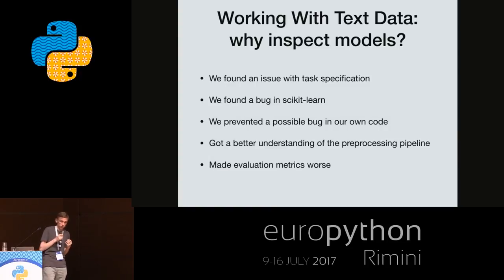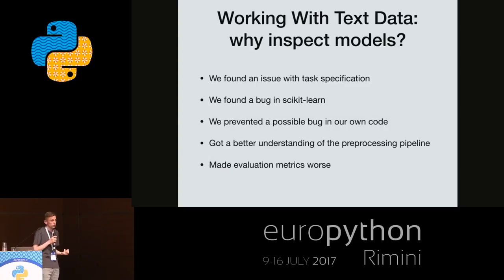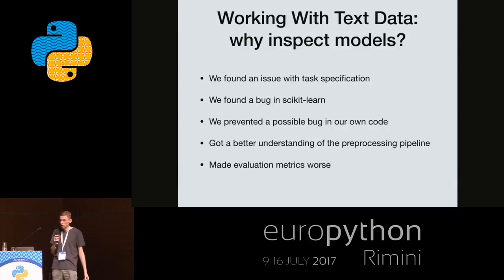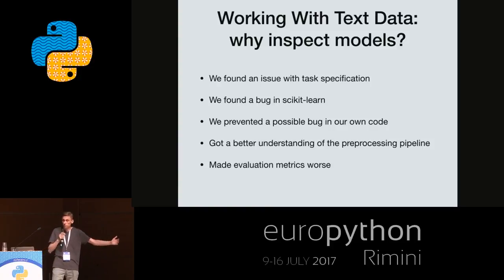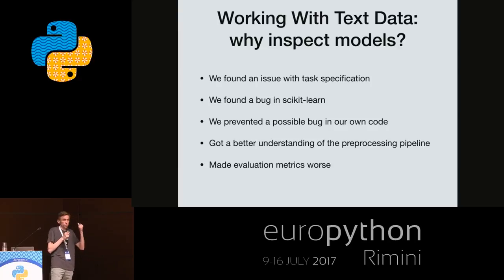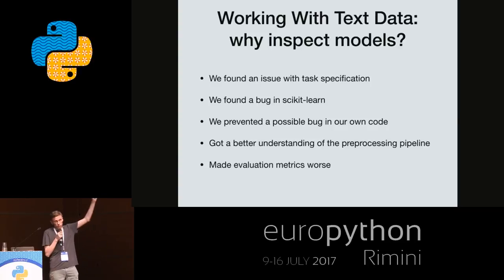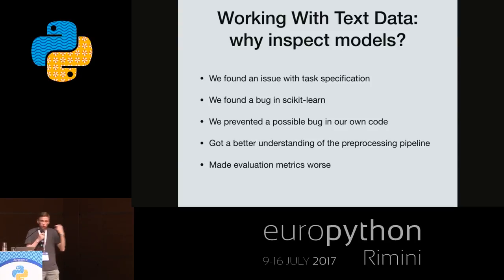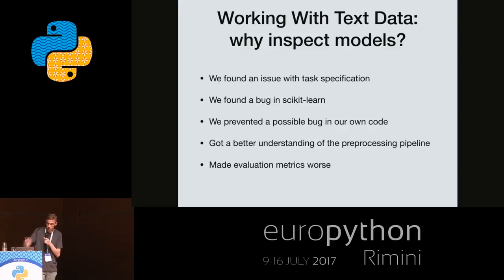By inspecting the model and checking what's going on, we were able to find an issue with data, an issue with task specification, a bug in scikit-learn, and we prevented a bug in our own source code. We got a better understanding of the processing pipeline — though we also made our evaluation score much worse. I'm not saying the scikit-learn tutorial is bad — it's very good. But I've seen these problems in every single machine learning project I've worked on. Any additional tool which can help you check data and debug what's going on is helpful.